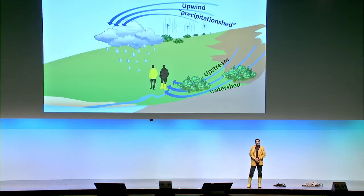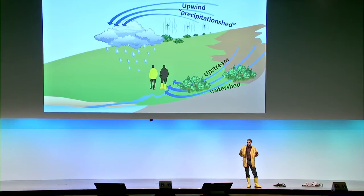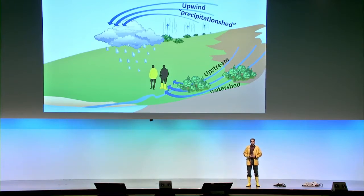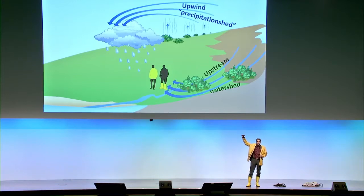This change in perspective is fundamental. It's like seeing the world upside down. With the rubber boot perspective, we only see rivers on the ground and manage forests in upstream watersheds to improve water regulation. With the rain jacket perspective, we also see rivers in the sky, and we start thinking of managing forests in distant places for improving rainfall and water availability.